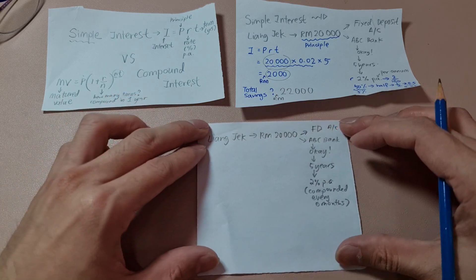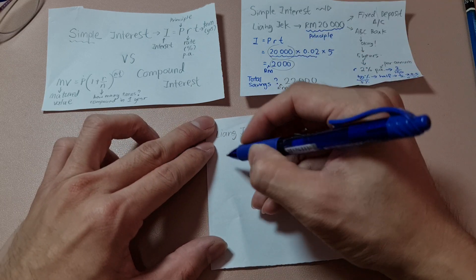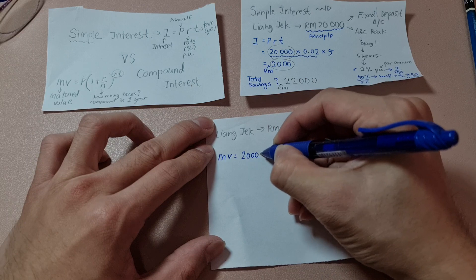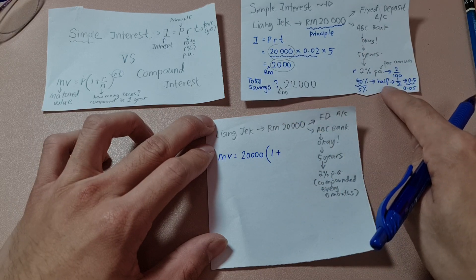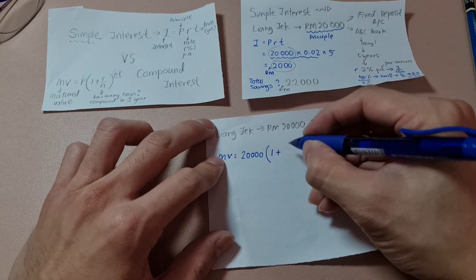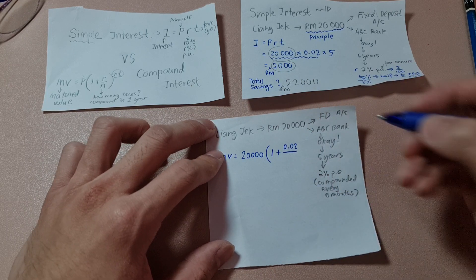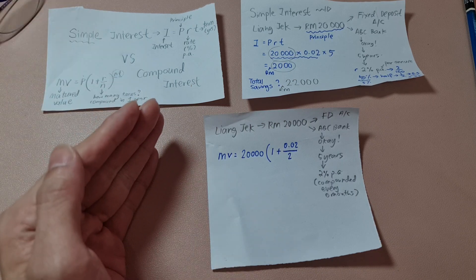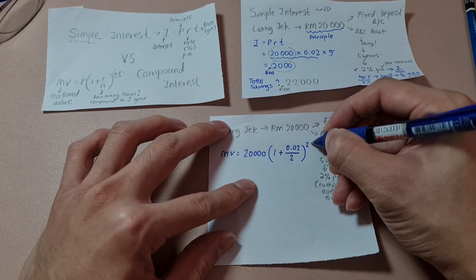I'm going to use the formula. Matured value — matured value being the total amount, not just the interest. Principal 20,000, bracket, 1 plus — remember 1 means 100%, the 100% principal. Rate: 2% is 0.02. Divide by — compounded every 6 months, so in 1 year you compound 2 times — divide by 2, close bracket, power 2 times 5.